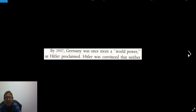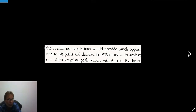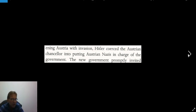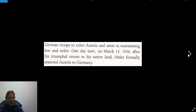Hitler was convinced that neither the French nor the British would provide much opposition to his plans. In 1938, he moved to achieve one of his longtime goals: the union, or Anschluss, with Austria — the second long-term cause. By threatening Austria with invasion, Hitler coerced the Austrian Chancellor into putting Austrian Nazis in charge of the government. The new government promptly invited German troops to enter Austria to assist in maintaining law and order.